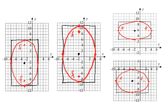We've now graphed ellipses with both horizontal and vertical major axes, located the foci, and completed the square several times. These are the skills you will need to graph ellipses. In the next video, we construct the hyperbola. The equation of a hyperbola is very much like the equation of an ellipse, and all of these same skills — completing the square and so on — will all be useful on the hyperbola, even though the graph has a very different shape.